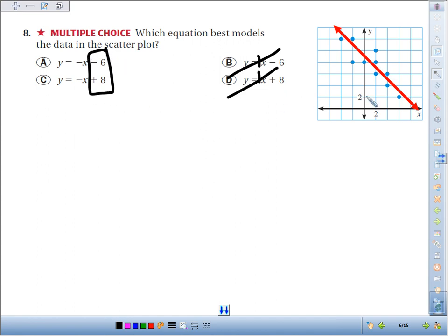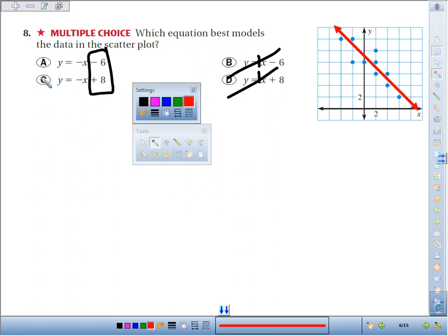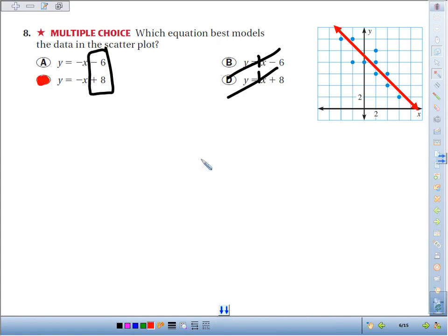And say, well, which one's closer? It should be between 8 and 10. Here's 8. Negative 6, not even close. So we definitely would say C is our correct answer.